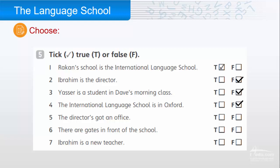It's in Saudi Arabia. Five: The director has an office — true. Six: There are gates in front of the school — true. Seven: Ibrahim is a new teacher — false; Dave is the new teacher.